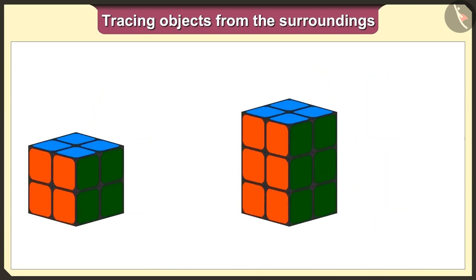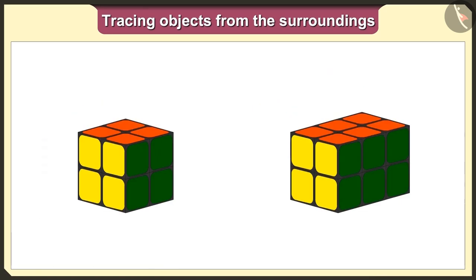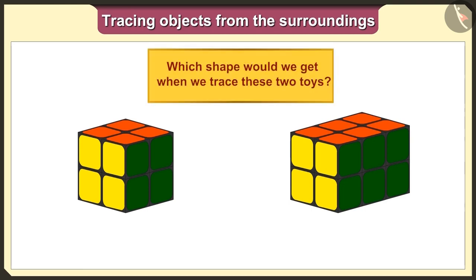I understood. Let's now change their base and keep both the toys like this. Now, tell me, which shape would we get when we will trace these two toys?